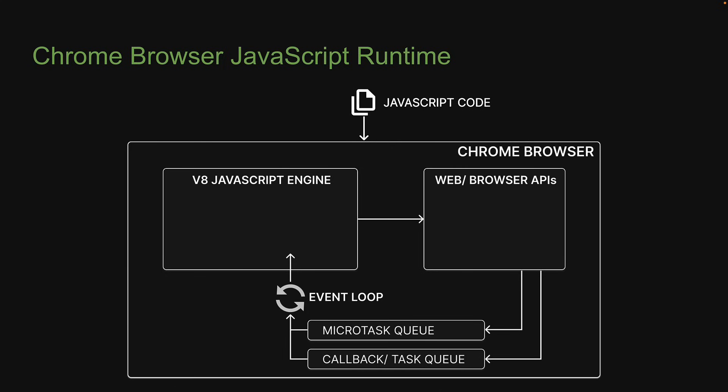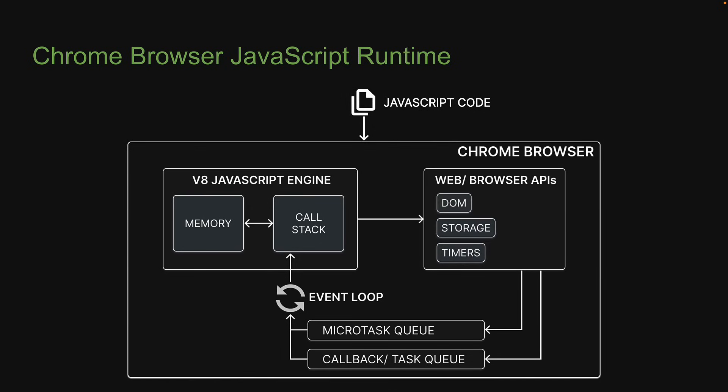The JavaScript engine is the V8 engine which executes JavaScript code. It consists of a call stack where JavaScript code gets executed, and a heap which is memory to store all the variables that a JavaScript application needs. Web APIs refer to the DOM, timers such as setTimeout and setInterval, promises, browser storage, etc., which add extra functionality to the JavaScript engine but are not part of the JavaScript language itself. All web APIs are provided by the browser.